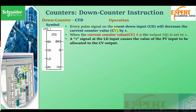Every pulse signal on the countdown pin will decrement the current counter value by one. A zero-to-one pulse on this pin will decrement the current counter value by one. When the current counter value is less than or equal to zero, the output Q is set to one — giving us a logic one at the output.